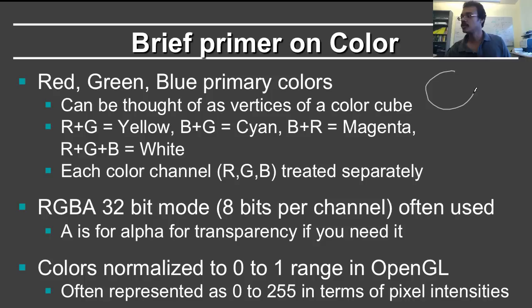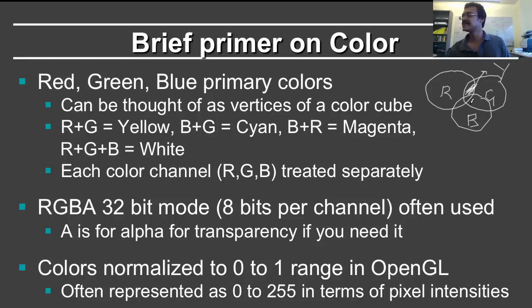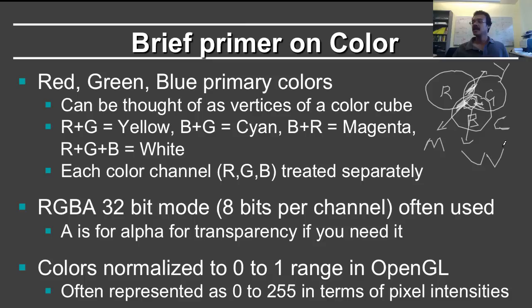In the Venn diagram, red and green meet to produce yellow, red and blue meet to produce magenta, and green and blue meet to produce cyan. The interesting thing is what happens when all three combine — that is white. So red plus green plus blue equals white. These secondary colors are: red plus green is yellow, blue and green is cyan, and blue and red is magenta.